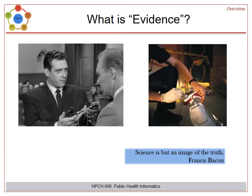Public health can use evidence to determine the truth of how a disease is transmitted, what risk factors contribute to health conditions, or what's the best intervention to positively impact the health of a certain population. The evidence by itself does not make a decision for you, but it can help to support public health functions. Evidence, like science, is what points to an underlying truth.